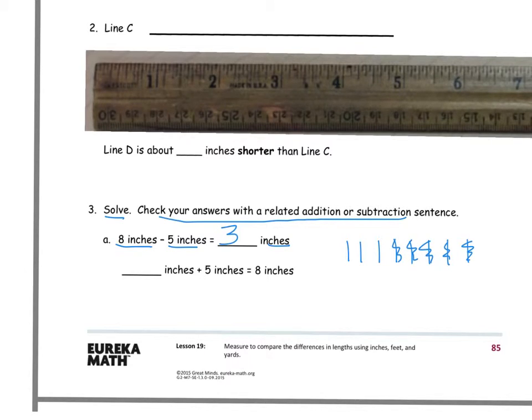The related sentence is blank plus 5 equals 8. And I said the answer is 3, so 3 plus 5 equals 8. Those are inches for units.